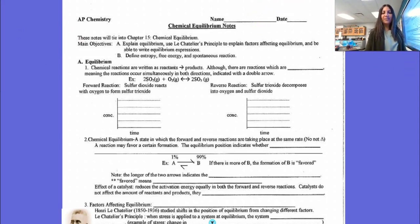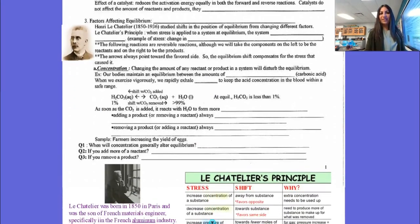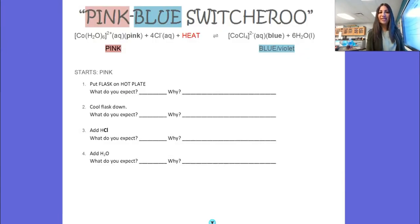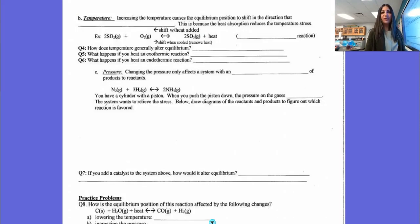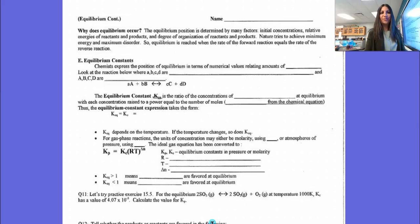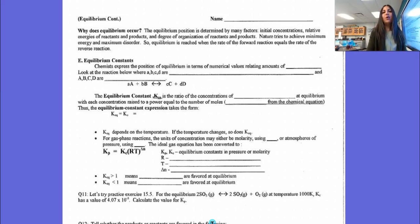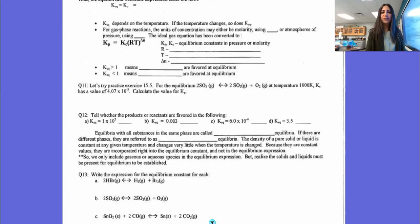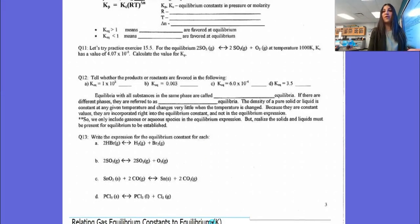On this first page we're talking about the basics of equilibrium. We'll be looking into Le Chatelier's principle — there's a picture of Le Chatelier right there. We'll be doing a demonstration today to show what happens with this pink-blue switcheroo. Then we'll talk about equilibrium constants and K, relating pressure versus concentration, and writing equilibrium expressions, which we've already done. So a lot of this is review.